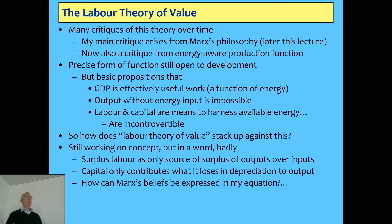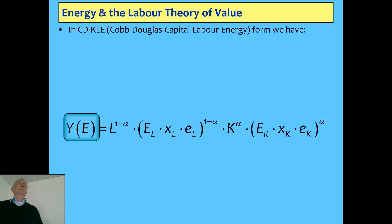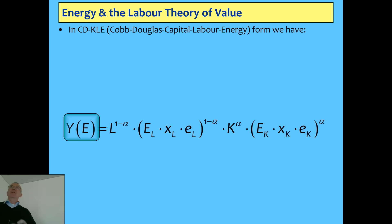The labor theory says surplus labor — labor above and beyond the cost of reproduction of the worker — is the only source of surplus of outputs over inputs, and capital only contributes what it loses in depreciation. So how can I put that set of beliefs into the equation I showed you last week? I'm going to use what I'll call the Cobb-Douglas-KLE form — capital-labor-energy — where I explicitly state the amount of capital rather than eliminating it by talking about gross energy used in industry. I'll put the last lecture on YouTube too, by the way.